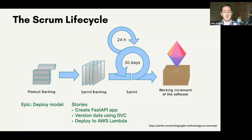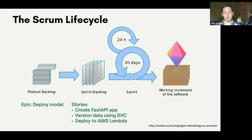What is Scrum? It's just a lifecycle, step by step. You have your product backlog — basically your epics. An epic could be 'deploy my machine learning model,' broken down into a bunch of stories that form your sprint backlog. Let's say we select: create an API, version our data with DVC, and deploy to AWS Lambda. That's what my team will try to achieve in the next two-week sprint. Once selected, we go into the sprint process — quick daily check-ins while letting the team self-organize and broadly focus on getting the job done. At the end, we have a working increment.